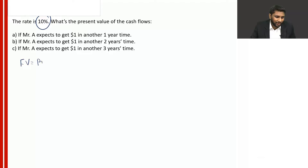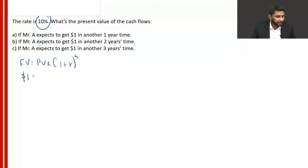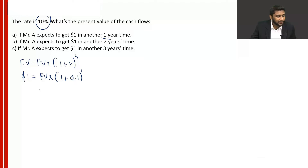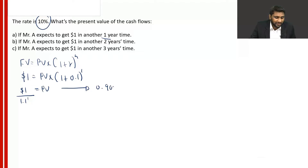Future value equals present value into 1 plus R to the power N. So he's expecting to get $1 in the future. $1 equals the unknown present value, times 1 plus R. The rate is 10%, after 1 year. So present value equals $1 divided by 1 plus 0.1, that is 1.1 to the power 1. The value is 0.909.